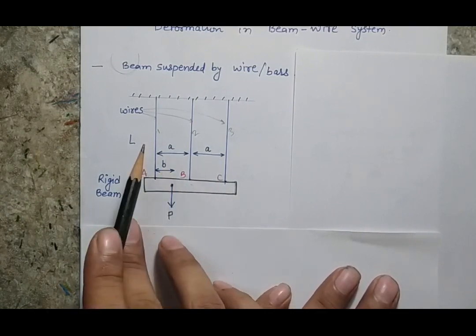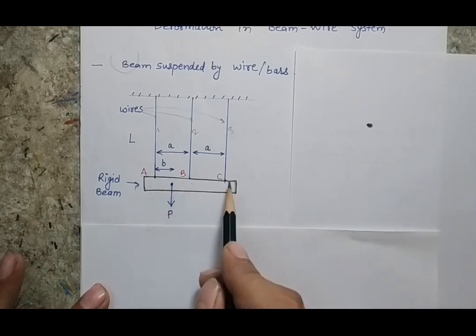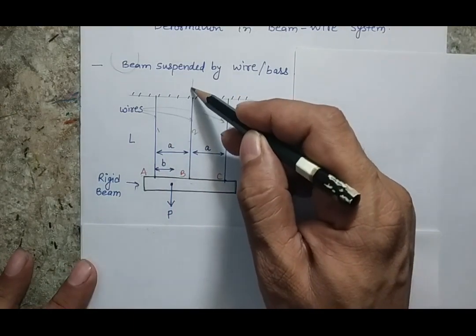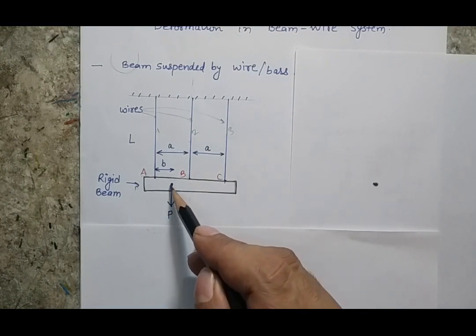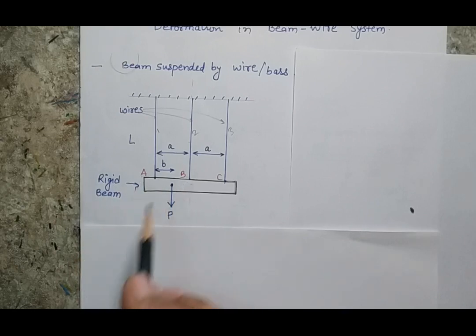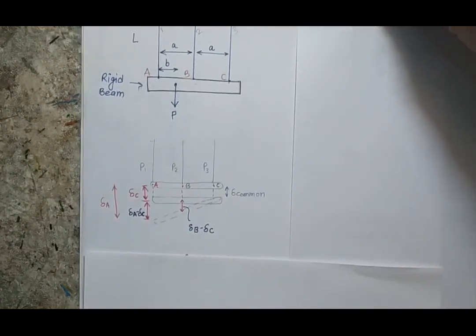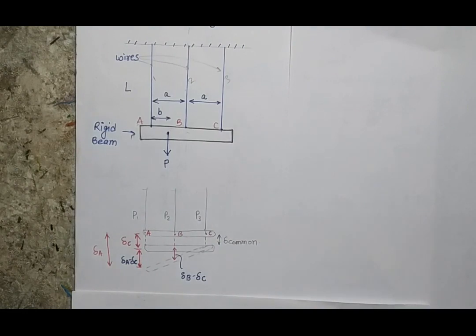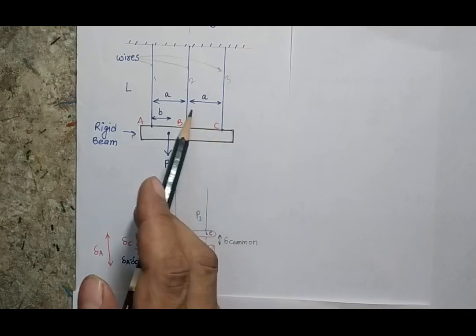Now if I apply force P here, the force is not at the center of the system. Since the gap between the two wires is equal — meaning the system is symmetric about the vertical axis — but we are not applying the force along that axis, the rigid beam ABC will not remain horizontal after the force is applied. I can divide the change in position into two phases. In the first phase, all three wires expand due to the distributed force.